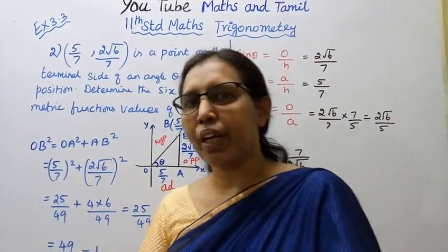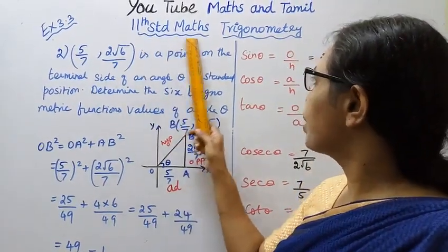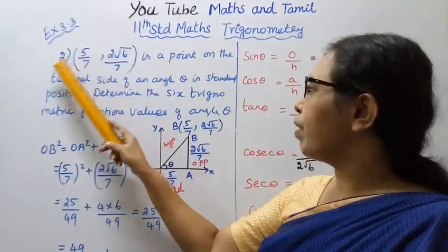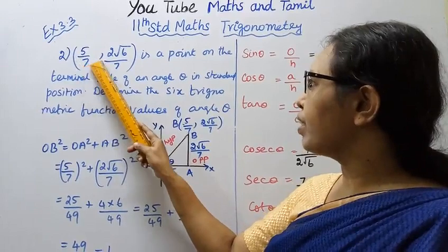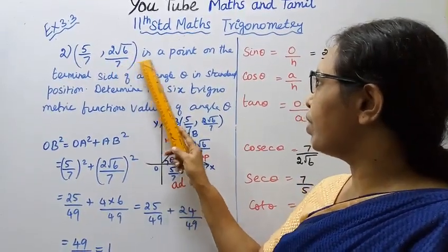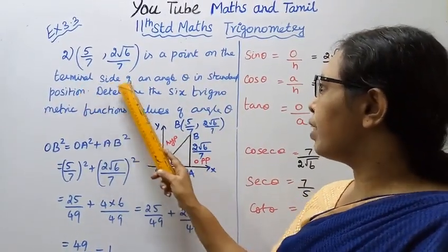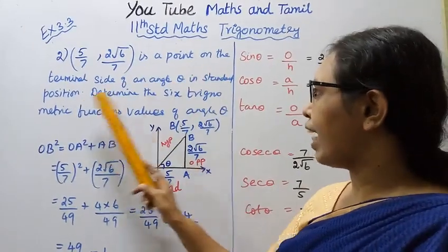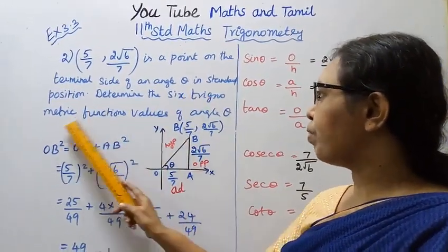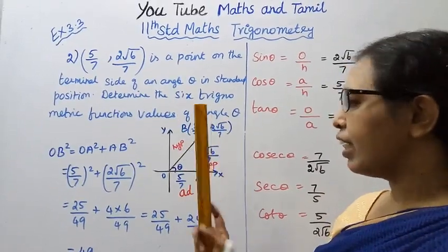Hello students, welcome to Maths and Tamil channel. 11th Standard Maths Trigonometry Exercise 3.3. The point (5/7, 2√6/7) is on the terminal side of an angle theta in standard position. Determine the six trigonometric function values of angle theta.